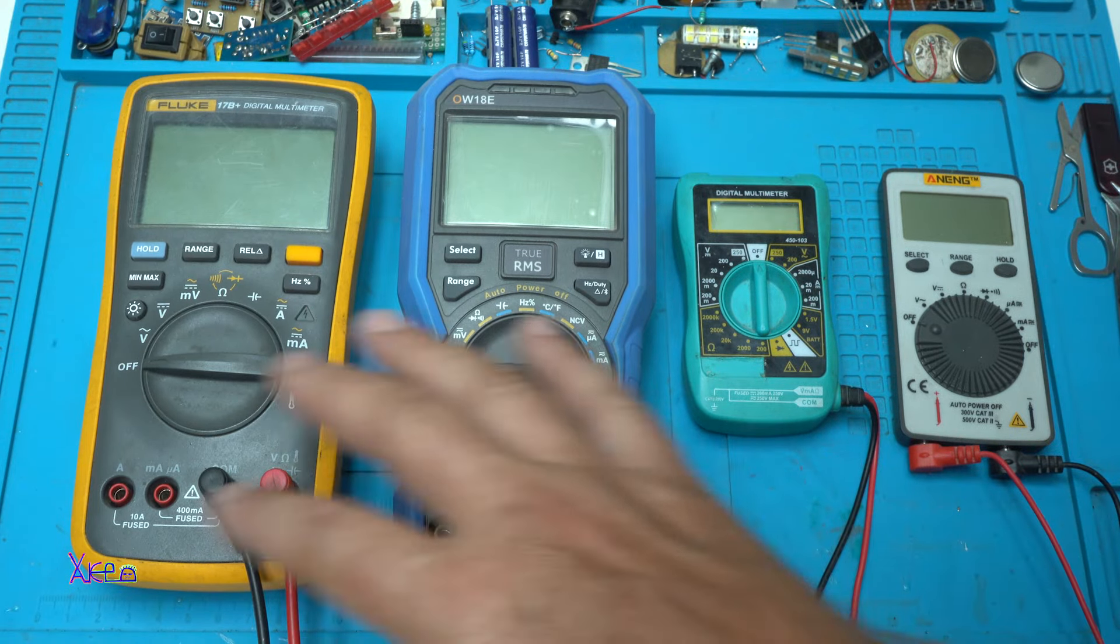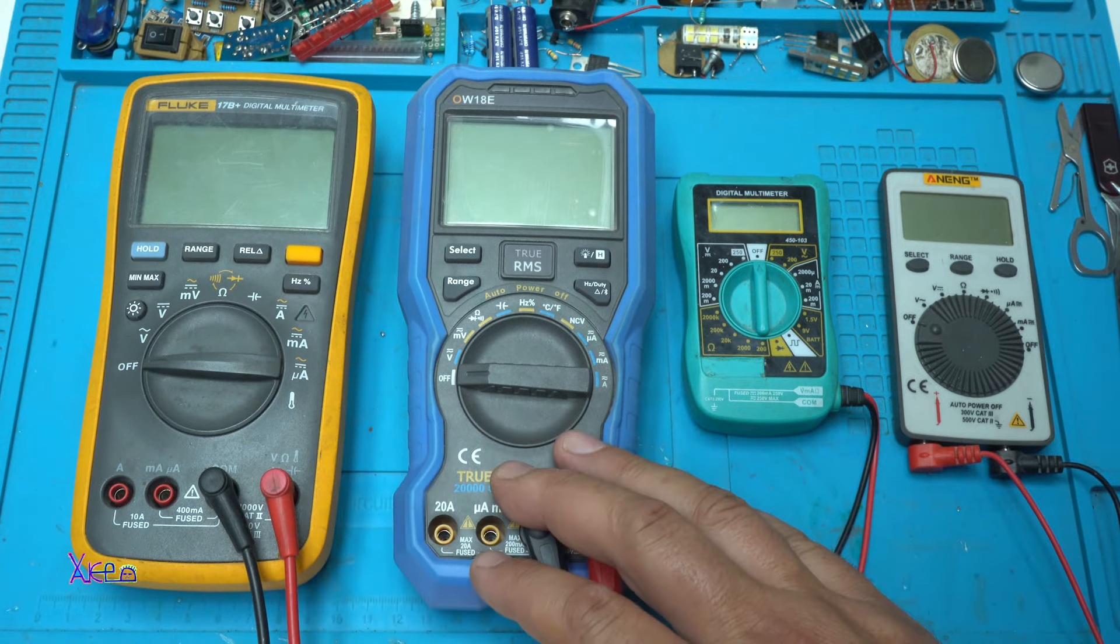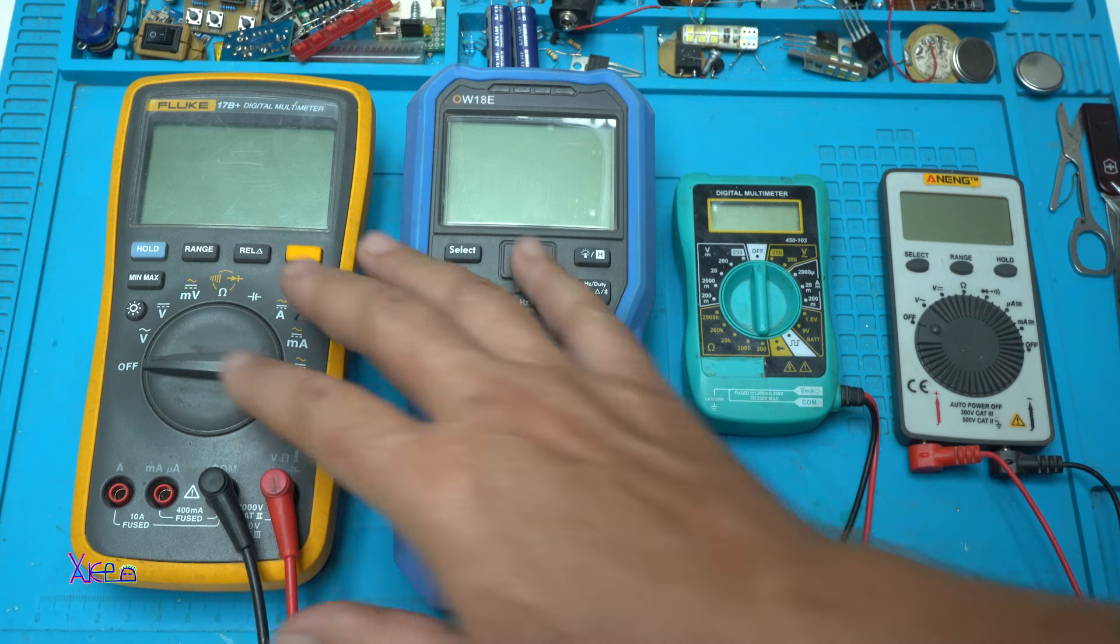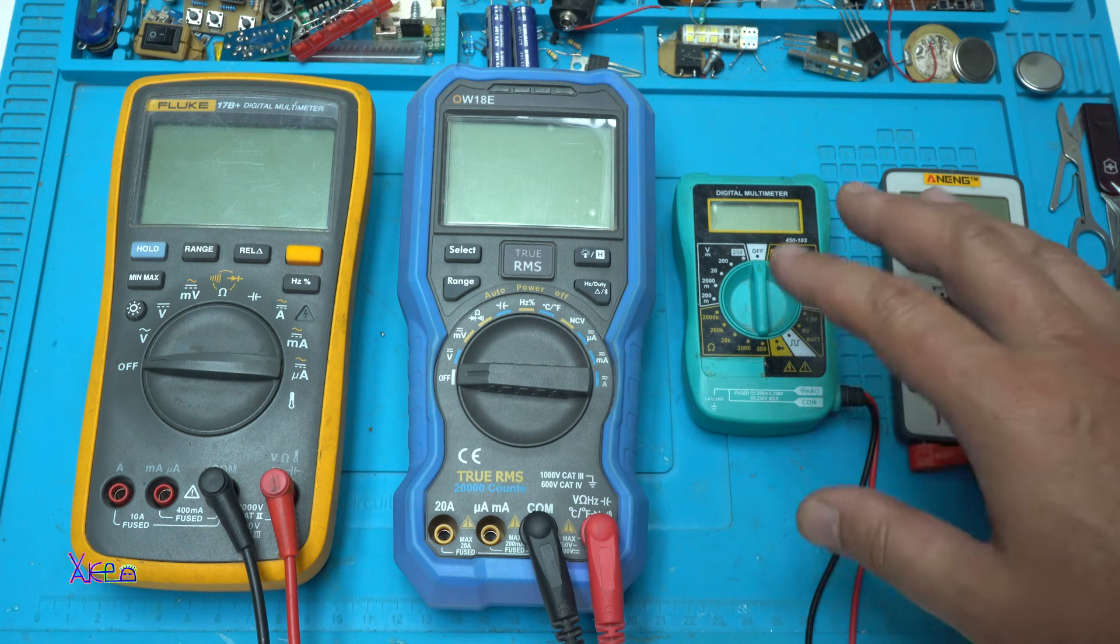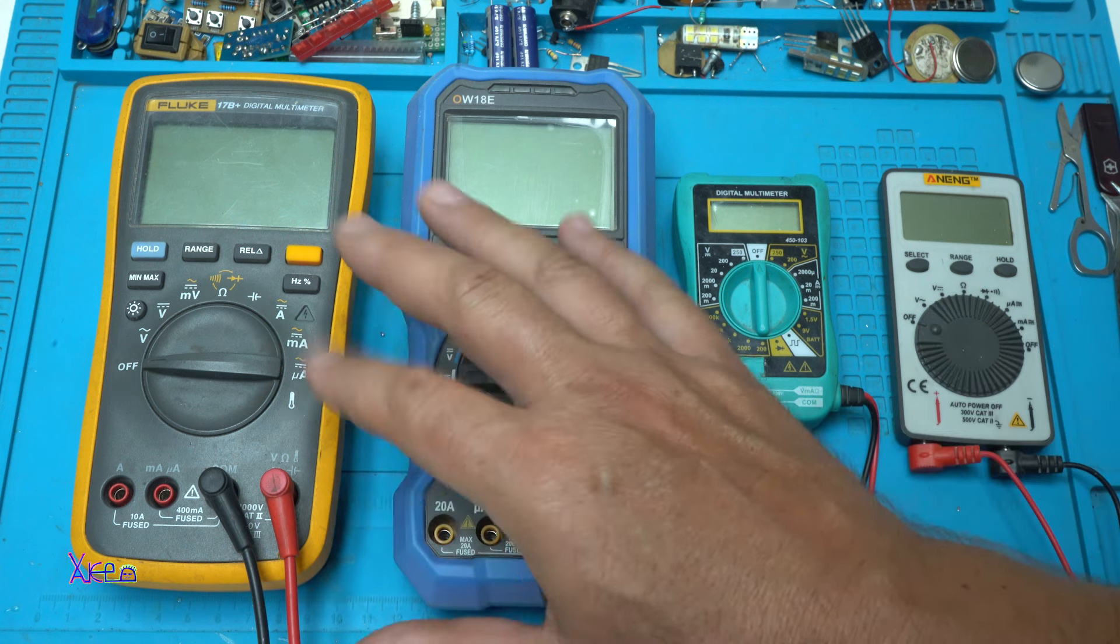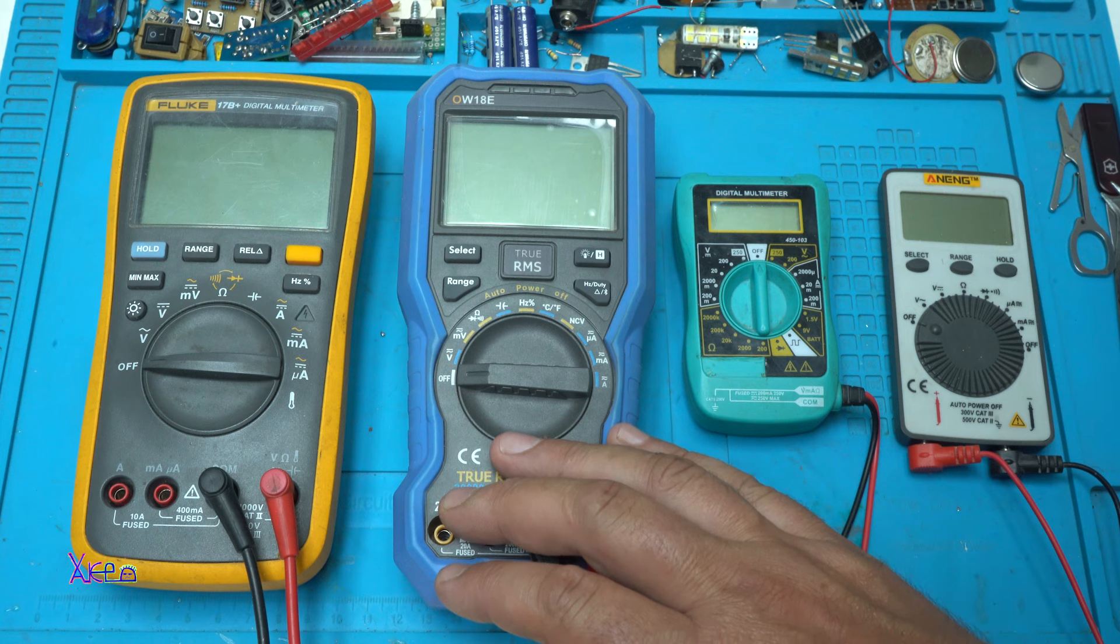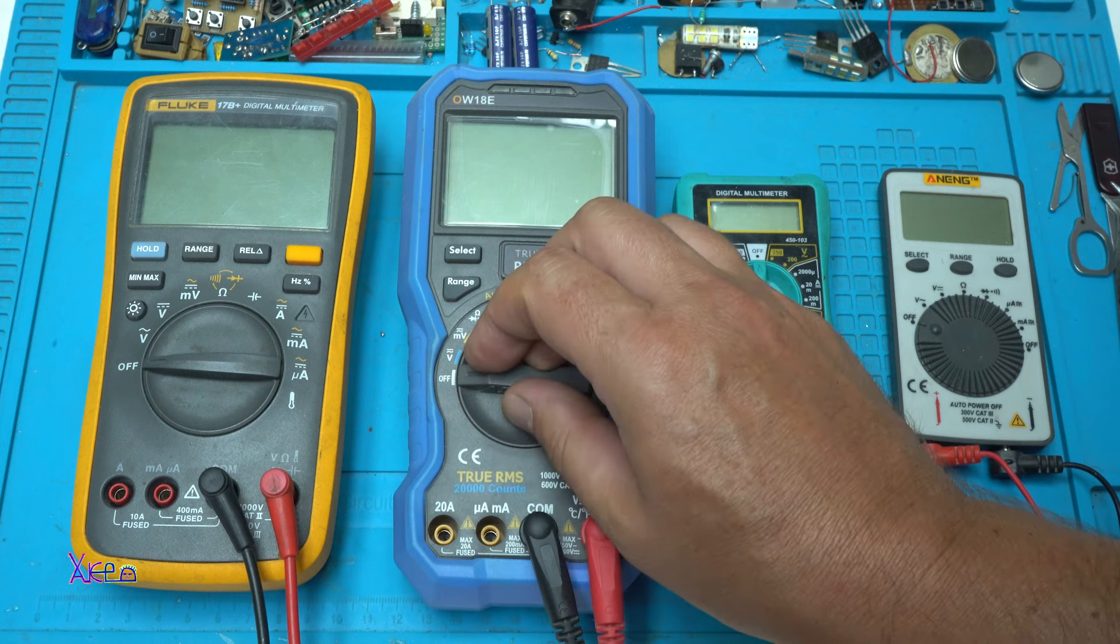As you can see, here I have different multimeters. So what is the difference between the bigger one and the smaller one, which are portable and this one are bigger in size. They have different functions for measurement.